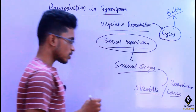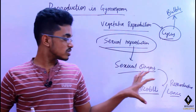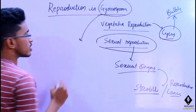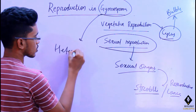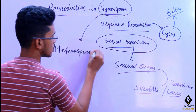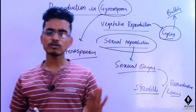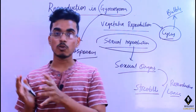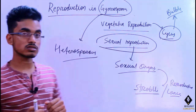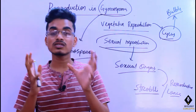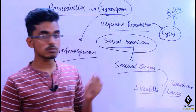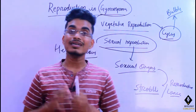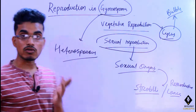These strobili or cones act as reproductive organs in the gymnosperms. The spores in gymnosperms are heterospores. Heterospores means there are two different kinds of spores formed — that is the reason why it is called heterospores. If the same kinds of spores were formed, it would be called homospores, but here we get two different kinds of spores, hence the term heterospores.